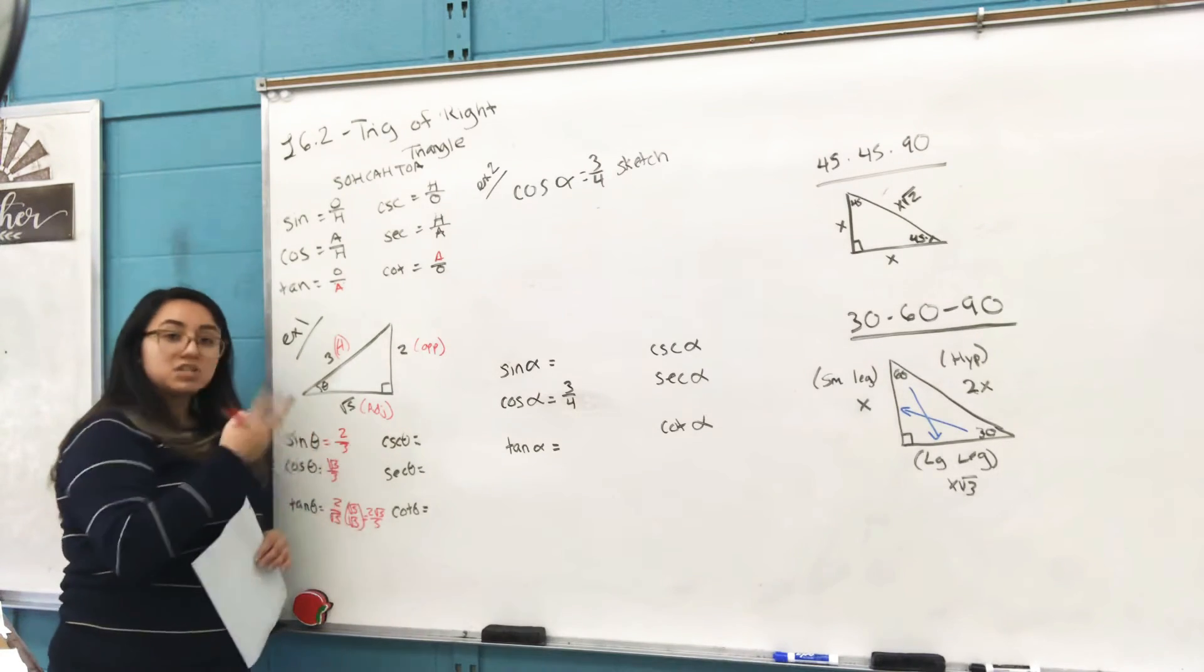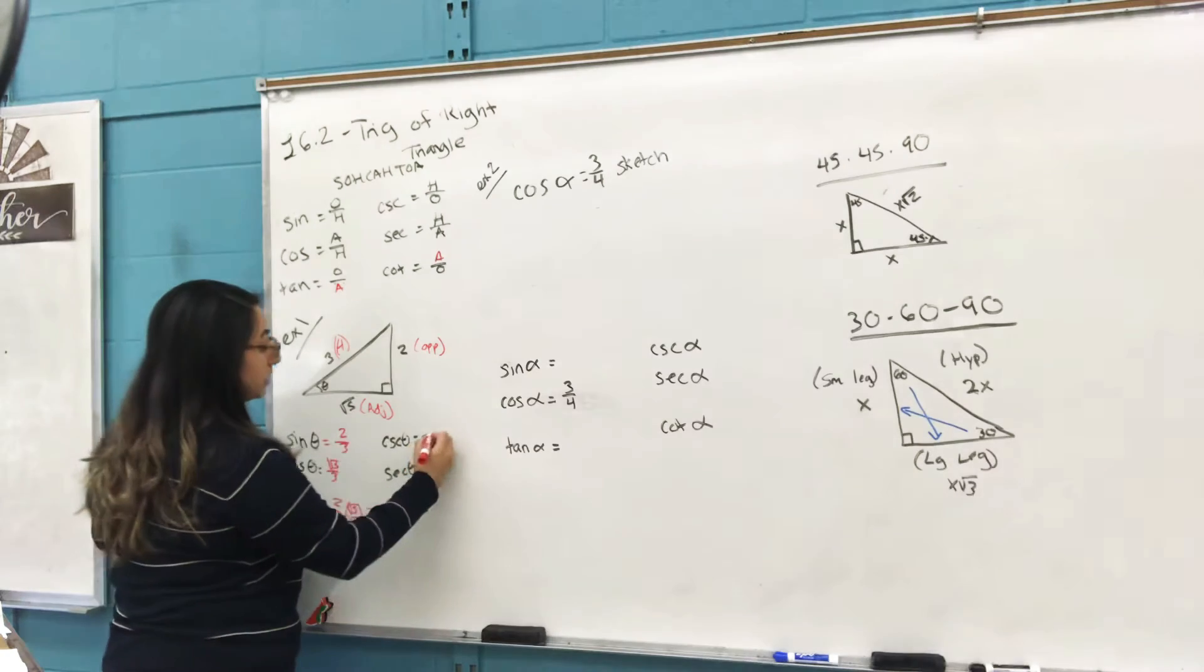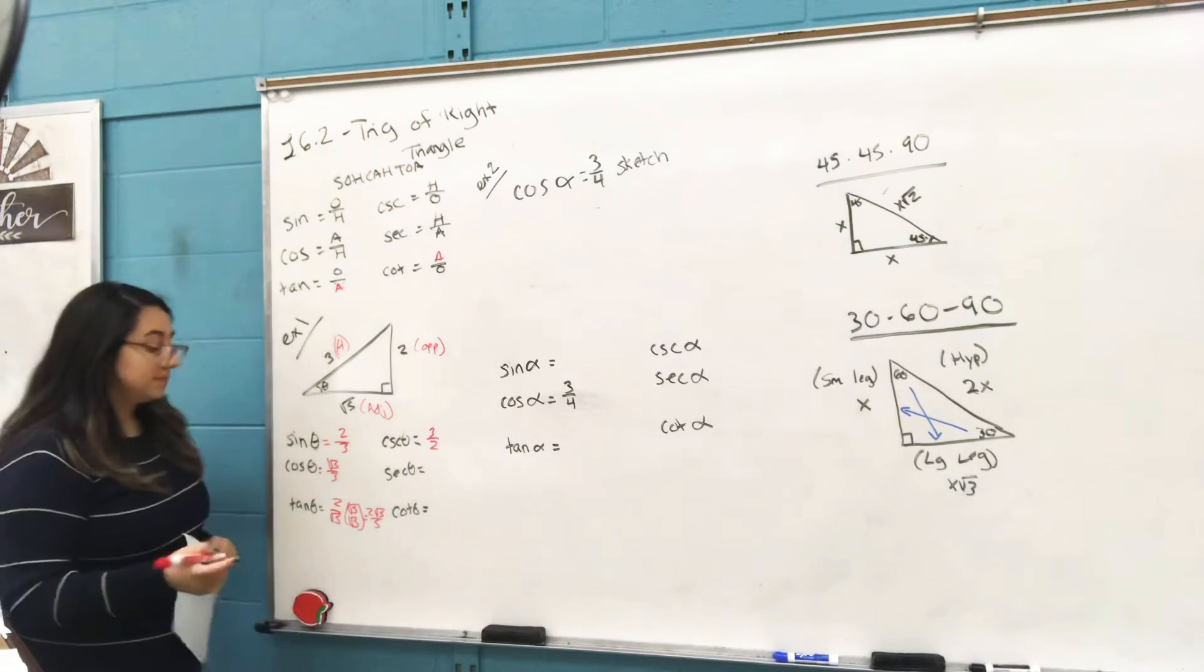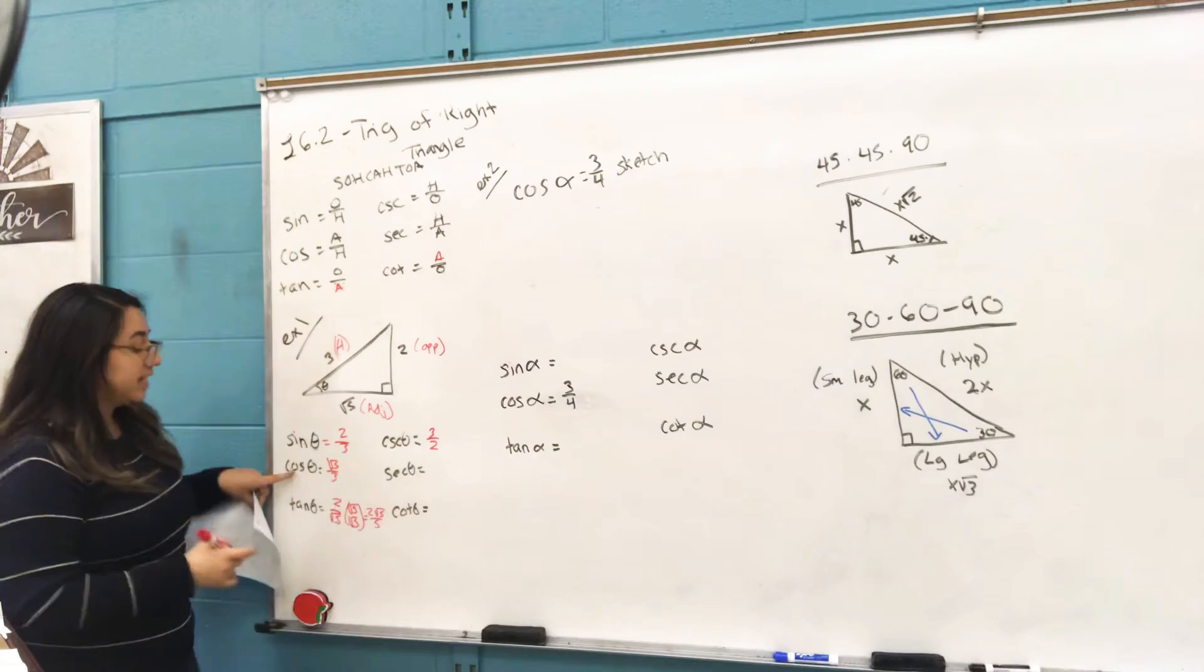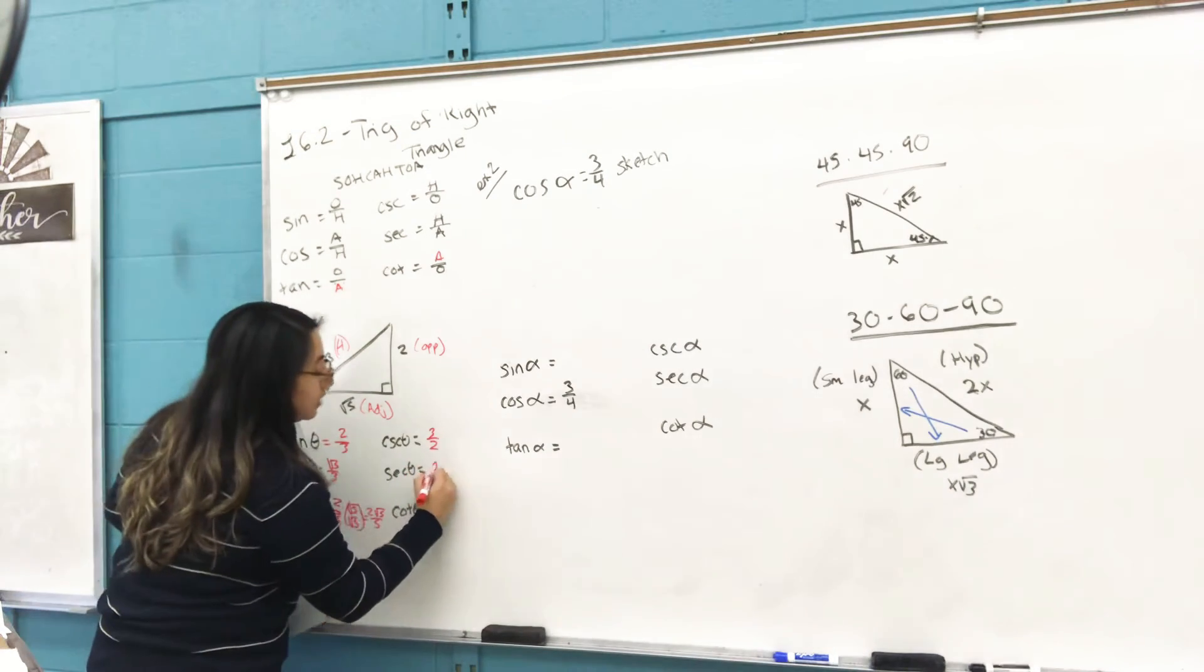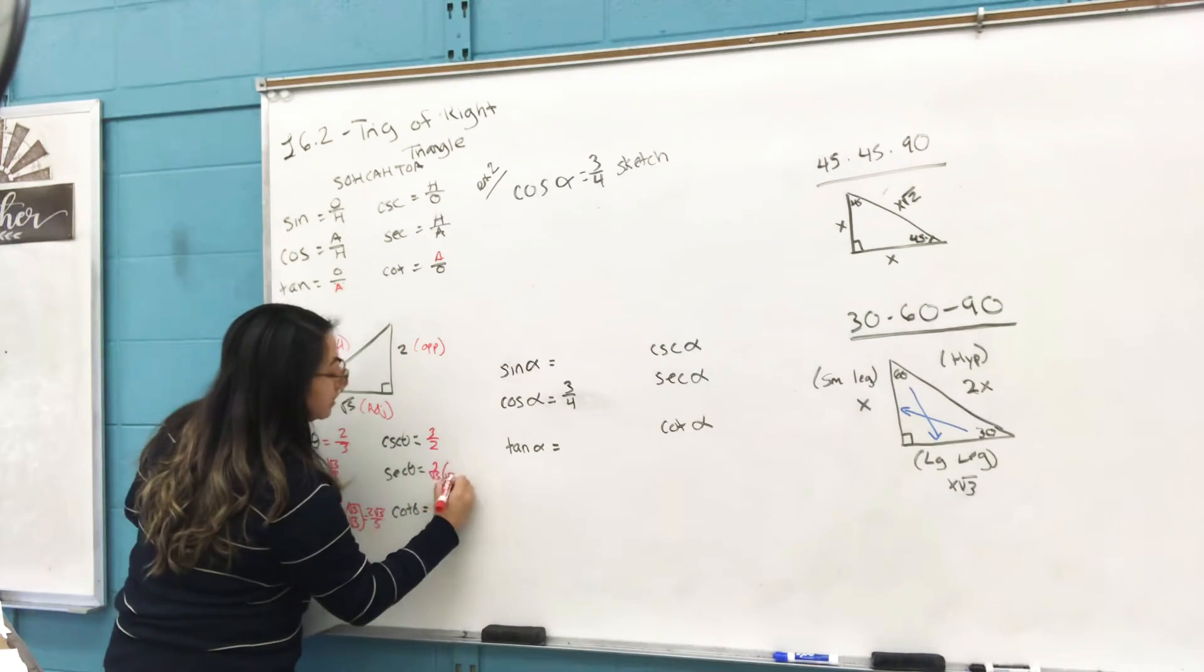Cosecant is the reciprocal of sine, so I have 2/3 here; that means I flip it. It's going to be 3/2. Secant: reciprocal of cosine. I flip it, I get 3 over √5.